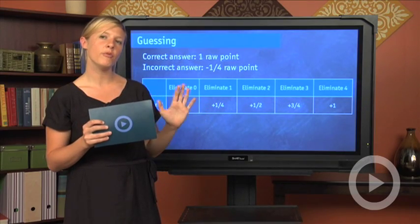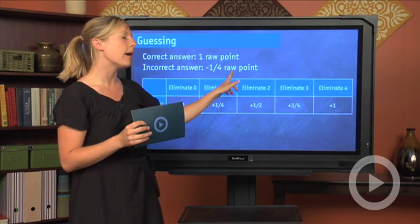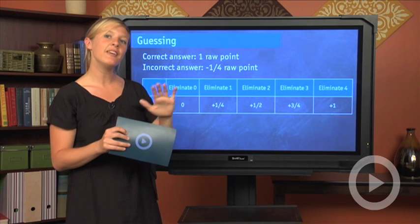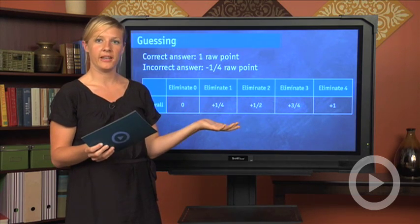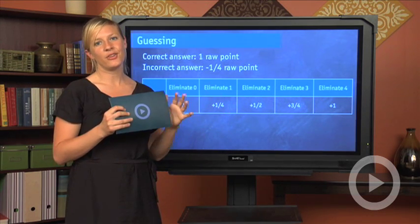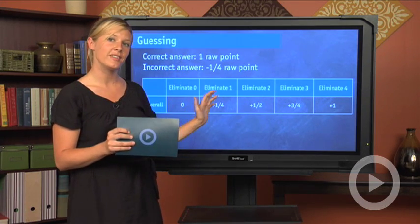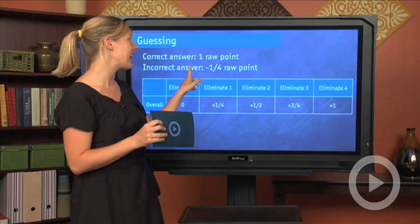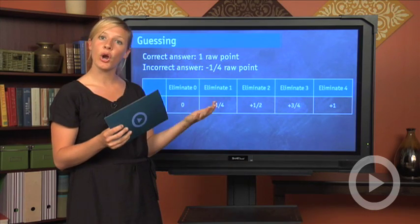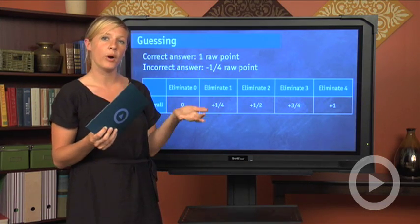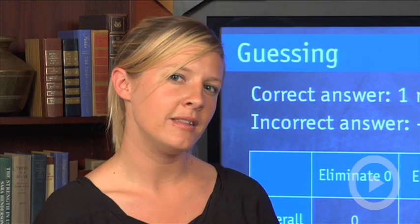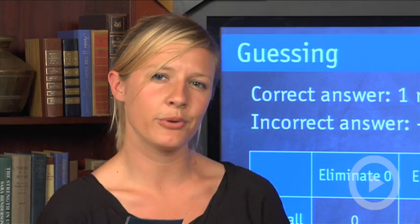Now, if you multiply four times a negative quarter raw point, you're going to get a negative one point cumulatively. That means that if you answer five questions completely at random without eliminating any answer choices, you're going to get it wrong four times, which means you're going to get a negative quarter raw point and correct one time, which is a positive one raw point. What that basically means is that you get a cumulative point total of zero.